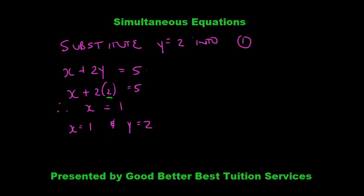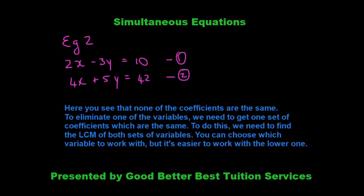Let's look at another elimination example. We have 2x minus 3y is equal to 10, and 4x plus 5y is equal to 42. When you look at this, none of the coefficients are the same. Looking at 2x and 4x, and minus 3y and positive 5y, the coefficients are not the same. So to eliminate one variable, we need to find the LCM of both sets of coefficients.